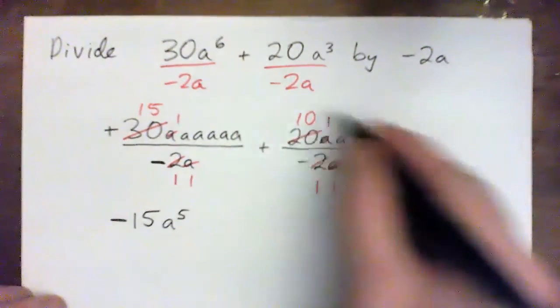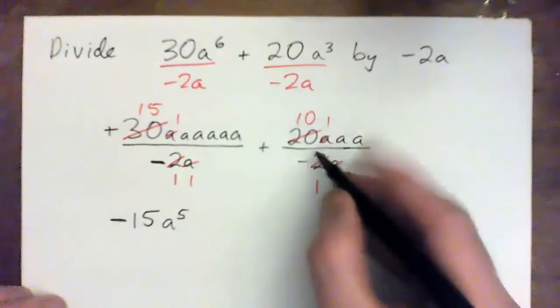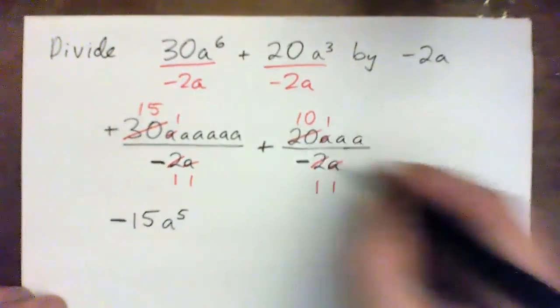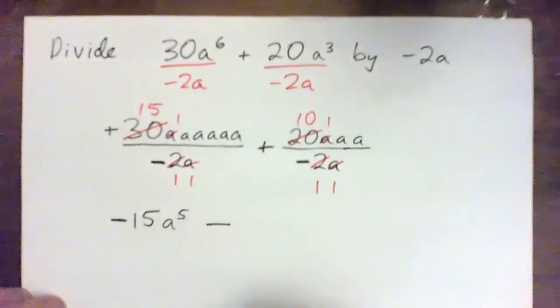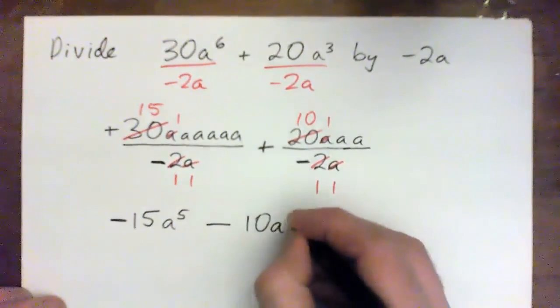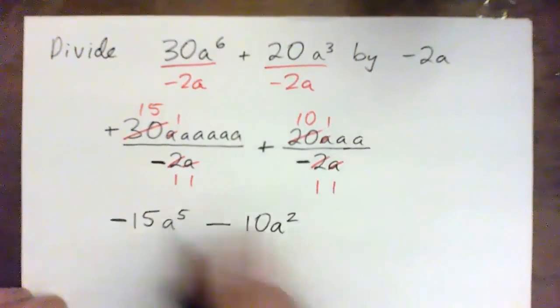And similarly, looking at the signs here, I guess I should start with the signs first. I've got a plus, and this is positive over negative. Now, positive over negative makes negative. And then it's 10 A A, 10 A squared, all over 1. And so that's our answer there.